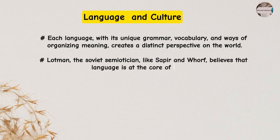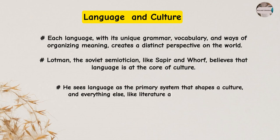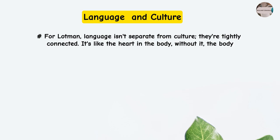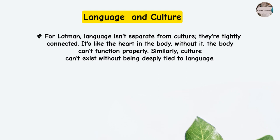Lotman, the Soviet semiotician, like Sapir and Whorf, believes that language is at the core of culture. He sees language as the primary system that shapes a culture, and everything else — like literature and art — as secondary systems derived from language. For Lotman, language isn't separate from culture; they're tightly connected. It's like the heart and the body — without it, the body can't function properly. Similarly, culture can't exist without being deeply tied to language.